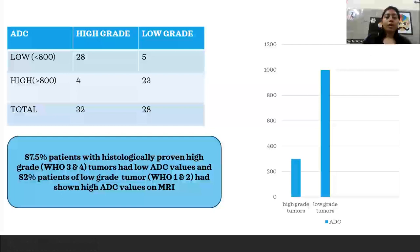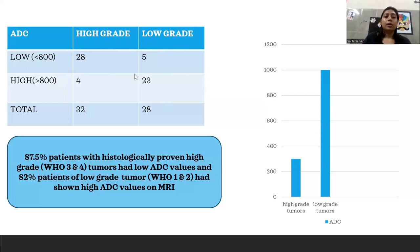Coming to the main findings: 28 patients with high-grade tumor had low ADC values, while 4 patients with high-grade tumor had high ADC values. Five patients with low-grade tumor had low ADC values, and 23 patients with low-grade tumor had high ADC values. We can clearly see that 87% of patients with histologically proven high-grade tumors had low ADC values, and 82% of patients with low-grade tumors showed high ADC values on MRI.